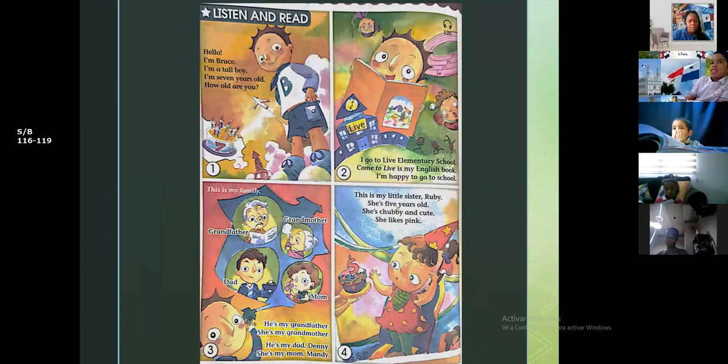This is my family. Grandfather, grandmother, dad, mom. He's my grandfather, she's my grandmother, he's my dad Danny and she's my mom Mandy. This is my little sister Ruby. She's five years old, she's chubby and cute. She likes pink.